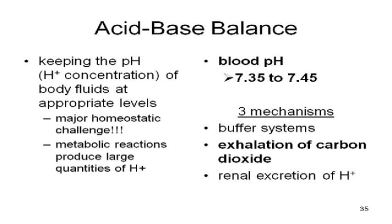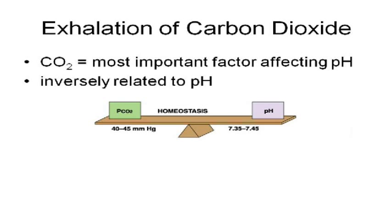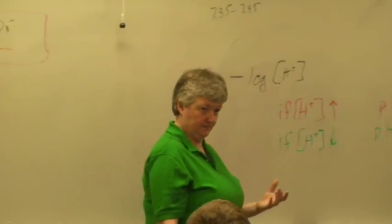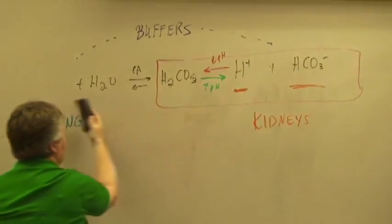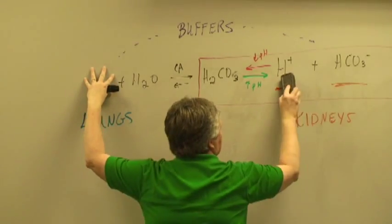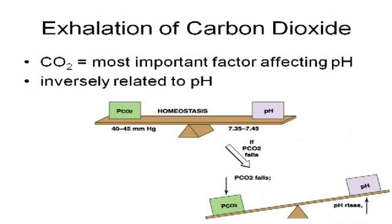Your lungs can respond very quickly to a change in pH. If something is causing pH to get out of whack and your buffer systems can't keep up — you've exceeded the capacity of your buffer systems — then your lungs can help. If you are breathing more deeply and exhaling more, you are blowing off CO2. The more you exhale, the more CO2 leaves your body. If you are losing CO2, the reaction shifts to produce more CO2, you end up with fewer hydrogen ions, and your pH goes up.